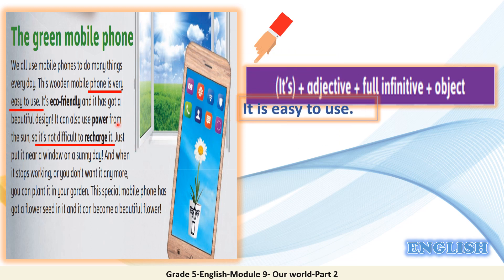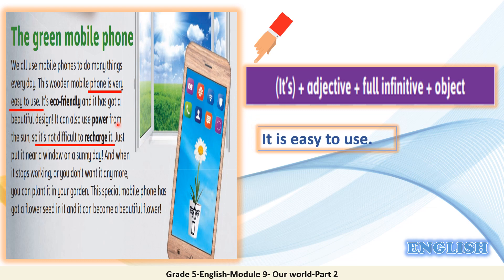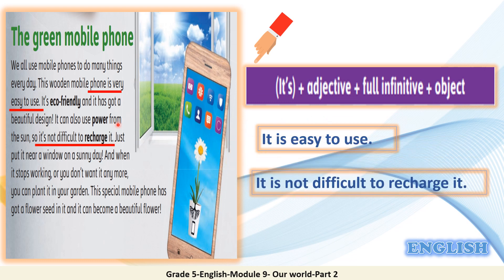So here, we can say: 'It is easy to use.' Also, 'It is not difficult to recharge it.' Dear students, remember, it's: it's plus adjective, plus full infinitive, plus object. In 'It is not difficult to recharge it,' 'it' is the object.